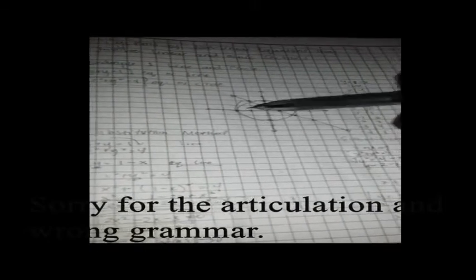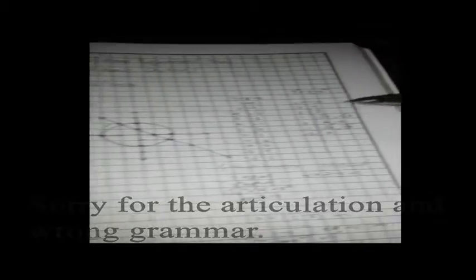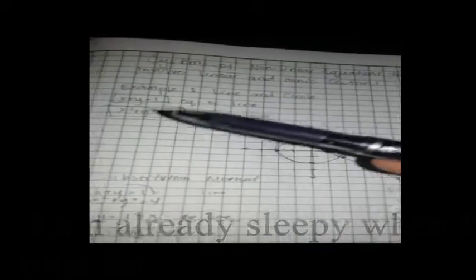This is our graph that we obtained by having our table of values and solving our equations. One of the methods on how to find the intersecting points of the two graphs is through substitution method.